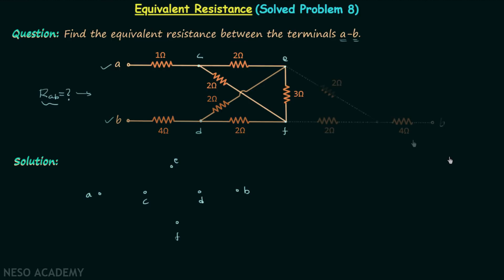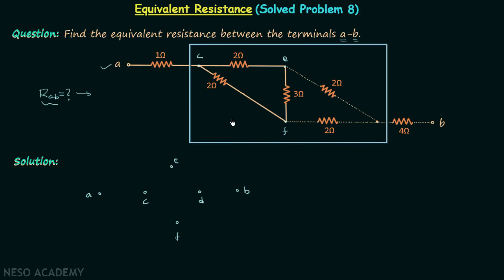Then we will have something like this, and here we can see that we have one bridge in between. This bridge is in balanced condition because all four resistors are the same. When you calculate the equivalent resistance between C and D, you will find it is equal to two ohms. When the bridge has all four resistors the same, then the equivalent resistance is also the same, so we have RCD equal to two ohms.